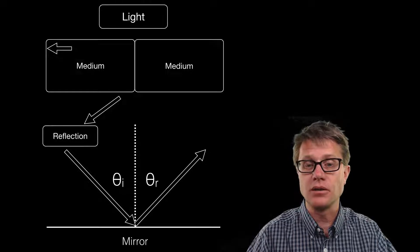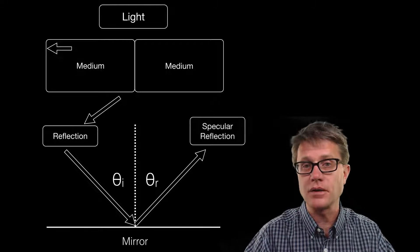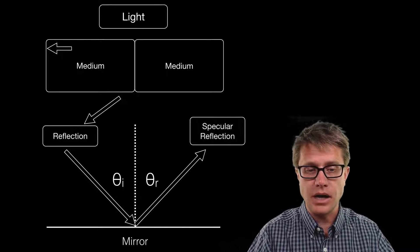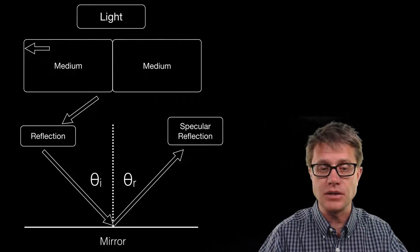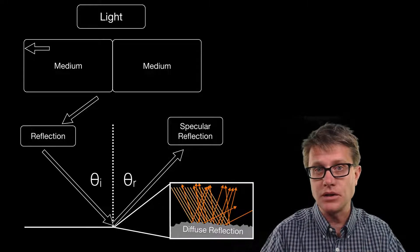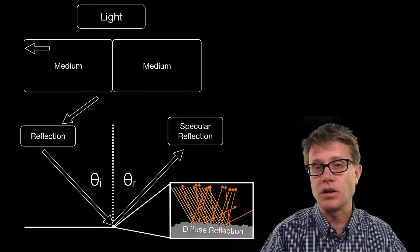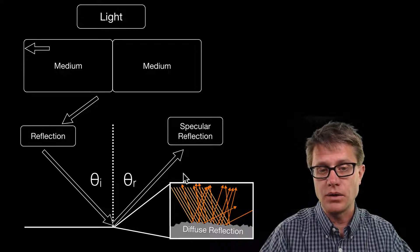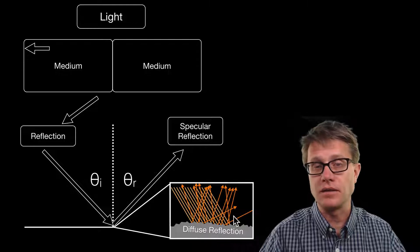Now this is specular reflection, in other words it is perfect mirror-like reflection. And you can imagine that is not always going to happen. If we look at the actual surface it is bouncing off, if it is not perfectly straight, then we are going to get what is called diffuse reflection. And so we are going to have that light not just bounce off in one ray, but it is going to bounce off in a lot of different directions.